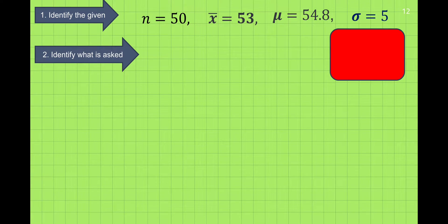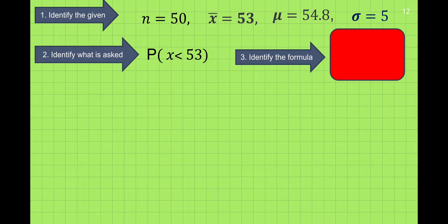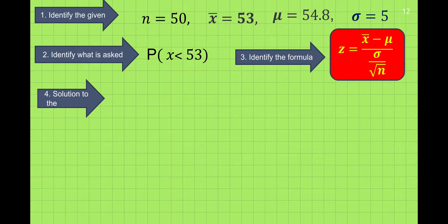Second step, we identify what is asked. Since we are finding the probability for 50 students to finish the test at 53 minutes, what is asked in the problem is the probability of x less than 53. Third, identify the formula — we're going to use the formula for the Central Limit Theorem. Fourth, solution to the problem: we're going to solve using the z-score.